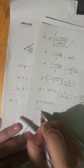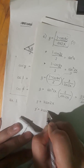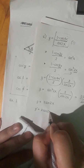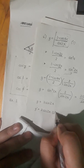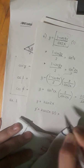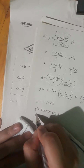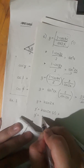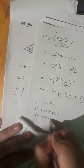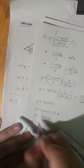Now with the simplified function y equals 2 sine of 2x, we can easily get its derivative. Derivative of 2 sine of 2x: the sine becomes cosine, and the derivative of 2x is 2. So the derivative of the function is 4 cosine of 2x.